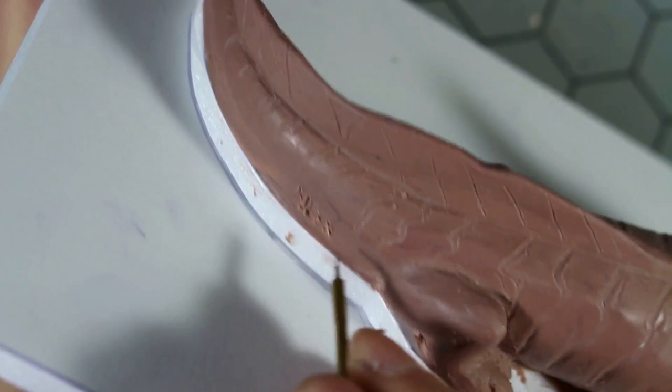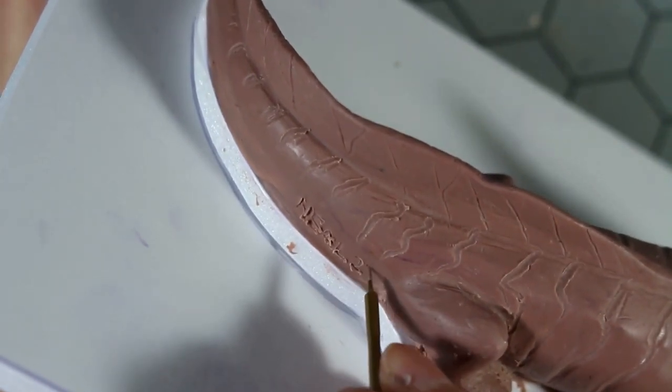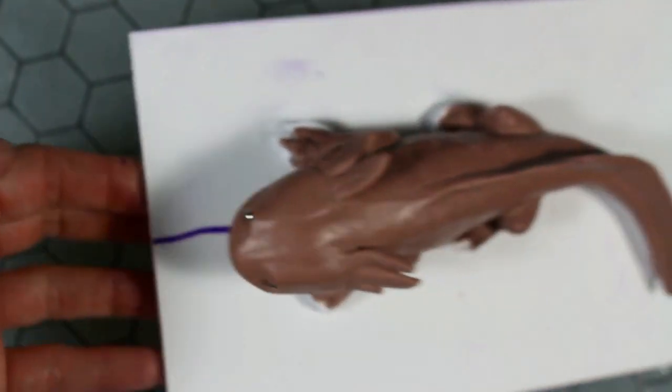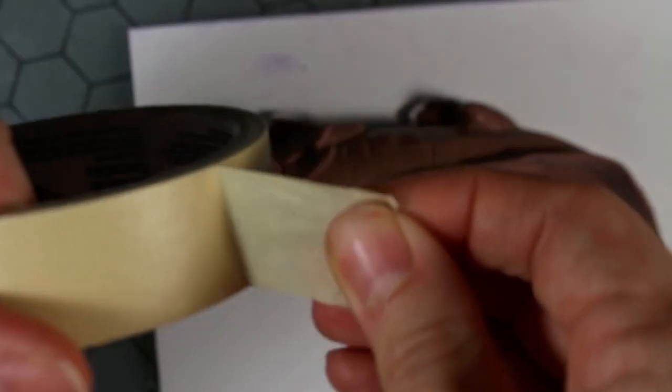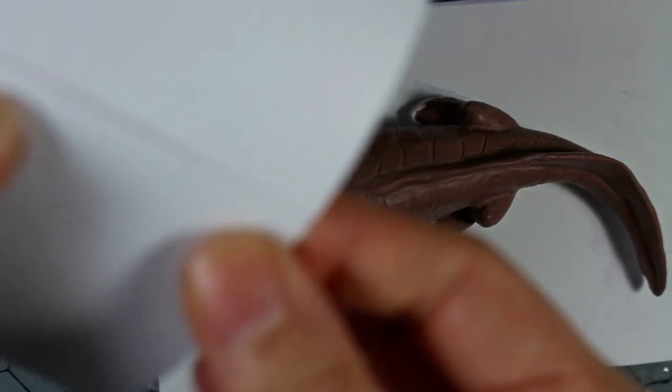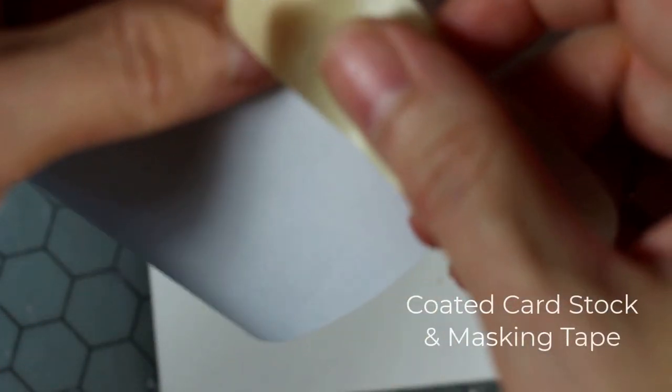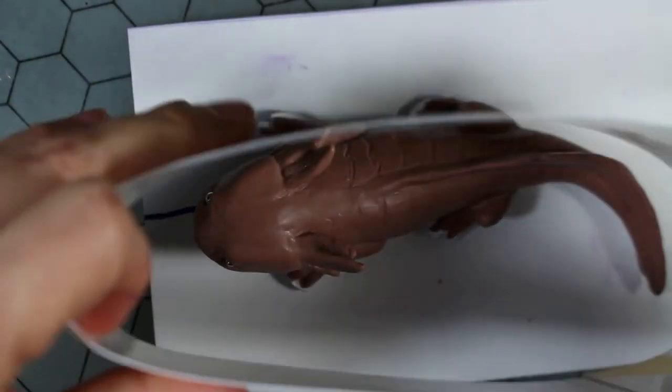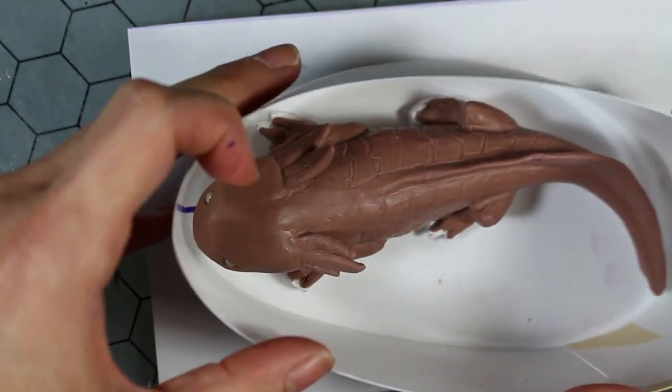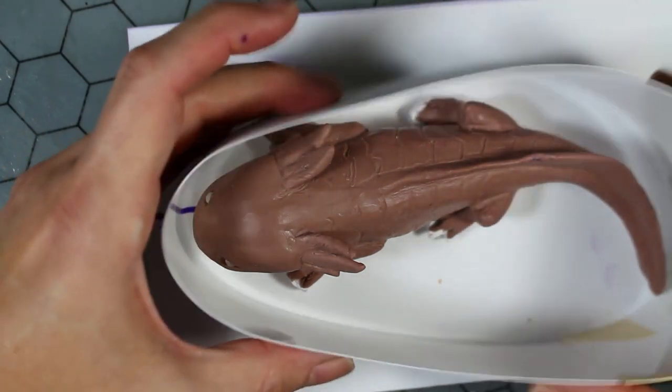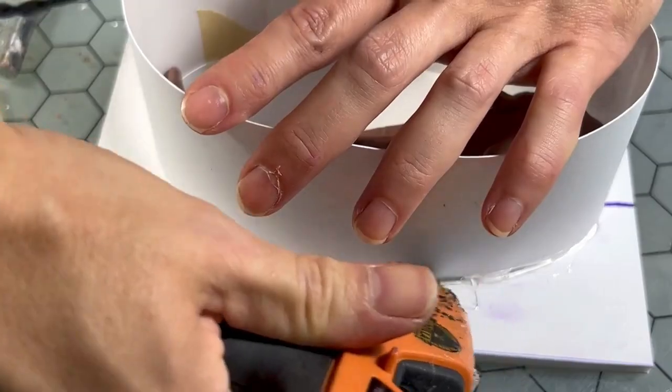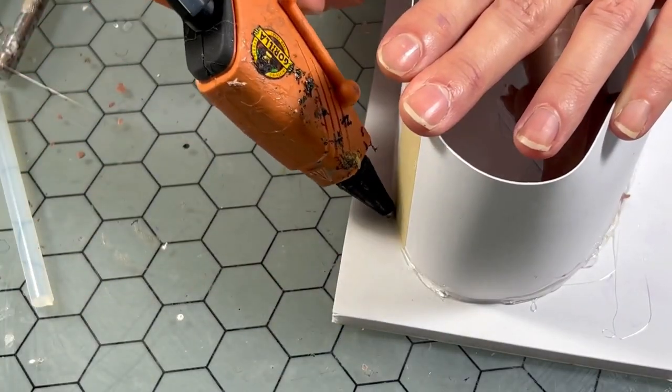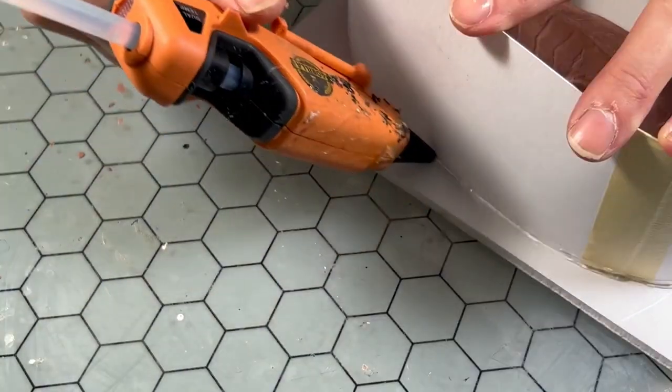And I'm also continuing the seam line onto the mold box itself so I know where to cut. And I had a pre-cut strip here of coated cardstock that I'm curling into a circle and then taping closed. And that's going to be the wall of my mold box. And I just run a bead of hot glue along the base making sure it is all sealed up. You want to make sure there's no air gaps there so silicone can leak out.